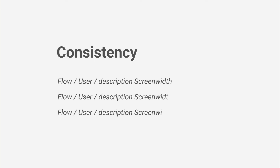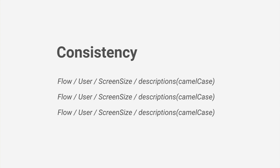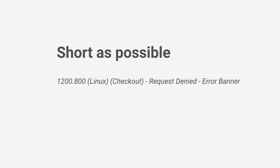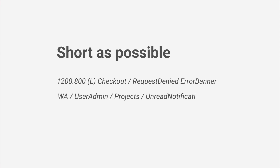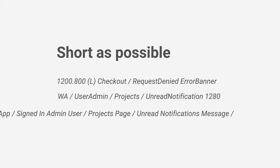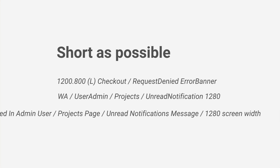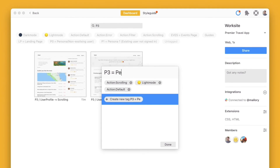Now for some requirements. The most obvious one is consistency — this is the backbone of the naming convention. If you're going to change the naming convention, it needs to be communicated with everybody. Keep your names as short as possible by adopting easy-to-understand abbreviations and choosing your words carefully. For example, 'WA user admin projects unread notification 1280' is much more concise than 'web app signed in admin user project page unread notifications messages 1280 screen width.' You can then break these out using the tabs feature in Zeppelin for an elevated level of understanding.